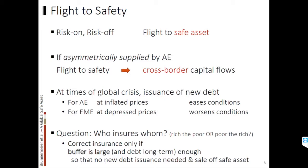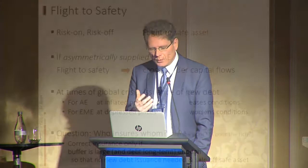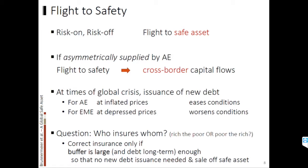What's interesting is that at times of global crisis, when the flight to safety occurs, it's very easy for the advanced economies to do some fiscal stimulus, because that's when the interest rate is actually going down for them. While for the emerging economies at times of crisis, the bond prices are depressed or the interest rate is very high, worsening conditions for counter-cyclical fiscal policy. So the question is essentially, who is insuring whom? It seems like the poor are insuring the rich, because through this flight to safety, the poor are providing insurance to the advanced economies. One way to counterbalance that is to build up large buffers, so the emerging economies can essentially get rid of this insurance scheme which is automatically built into the global financial architecture.